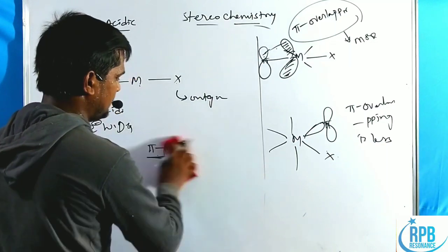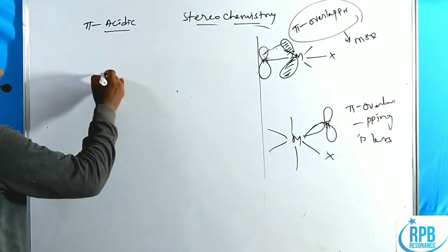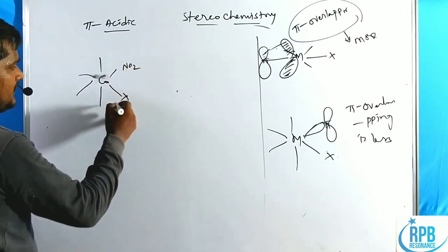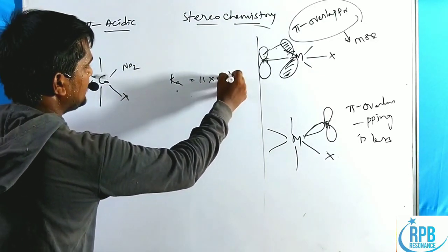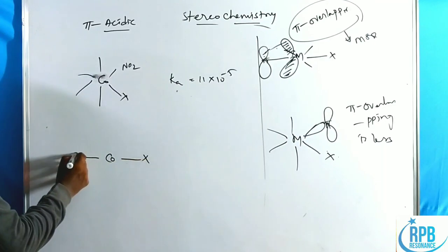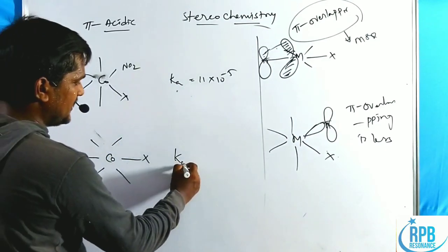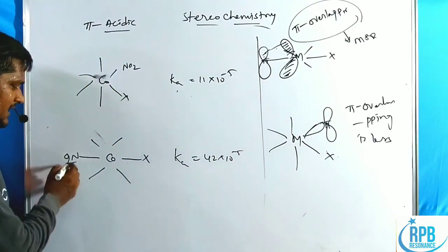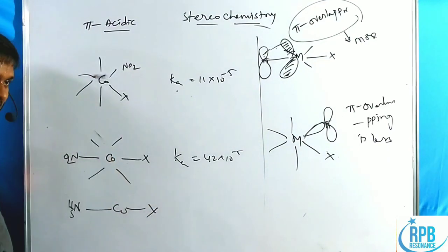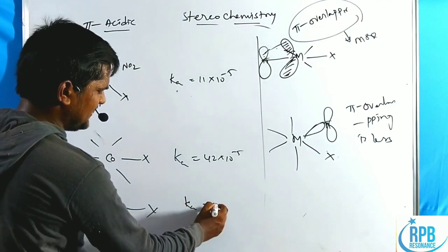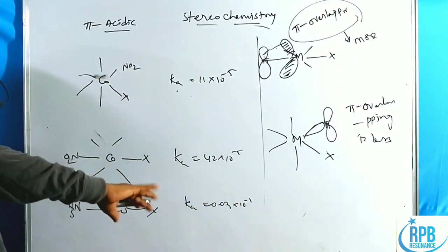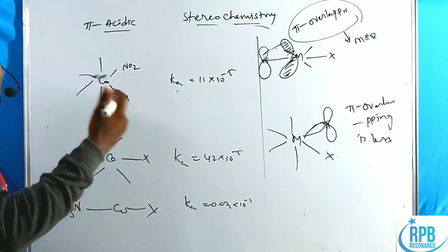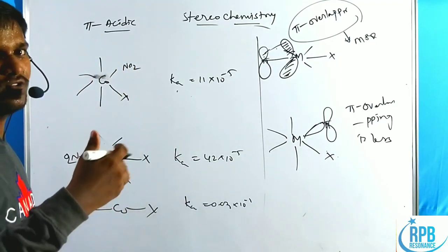I will give two examples with Ka values for cobalt complexes. For the cis compound with NO2 as Z: Ka value is 11 × 10⁻⁵. For the same compound in trans manner: Ka value is approximately 42 × 10⁻⁵ — much higher. Instead of NO2, using NH3 (the sigma donor ligand): Ka value is very much lesser at 0.03 × 10⁻³. This shows the simple reactivity trend of different ligands in the complex towards acid hydrolysis.